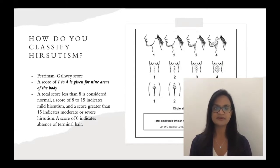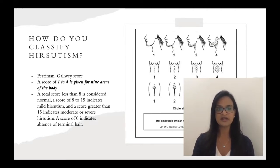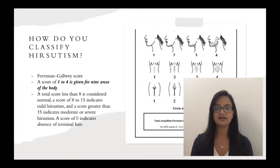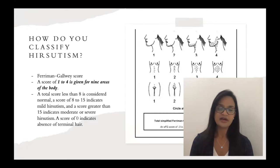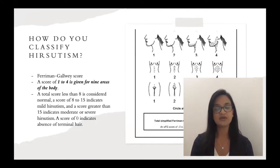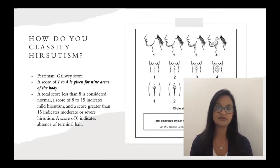The Ferriman-Gallwey score is used in clinic to identify the severity of hirsutism. A score of one to four is given for nine areas of the body. A total score less than eight is considered normal; eight to 15 indicates mild hirsutism; greater than 15 indicates moderate to severe. A score of zero indicates absence of terminal hair. This is a very delicate subject for patients, especially those who have been suffering from PCOS their entire lives — not only dealing with weight fluctuations they don't have control over, but also body hair that can't be permanently removed with laser treatments or oral contraceptive pills. It's very important to talk to patients with a lot of sensitivity around this subject.